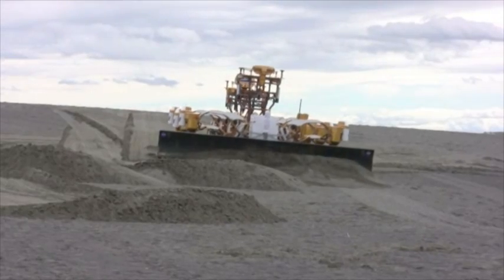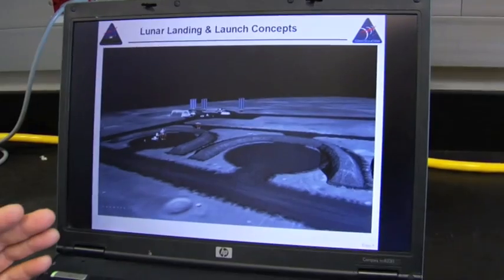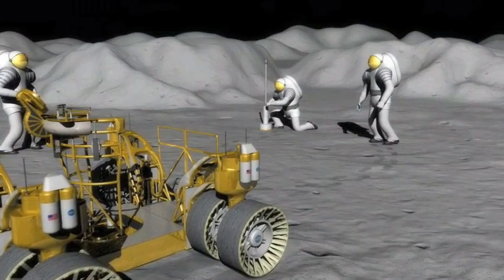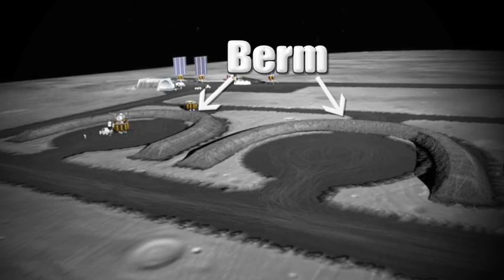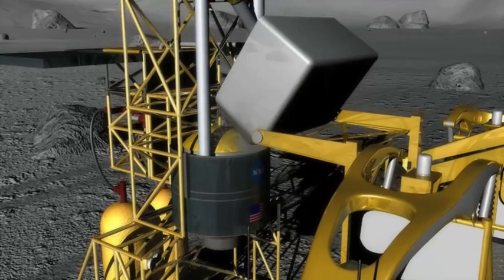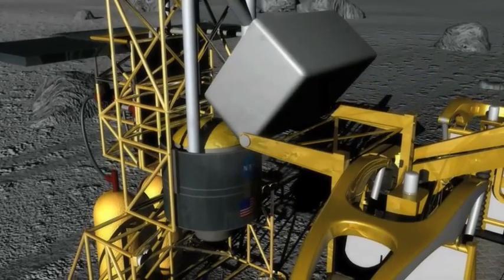One way to do this is to use the excavation tools to build berms around the landing sites to keep the dust from areas where astronauts will live. A berm is a mound of dirt that can be used to protect or insulate the area. Another option is to stabilize the regolith.